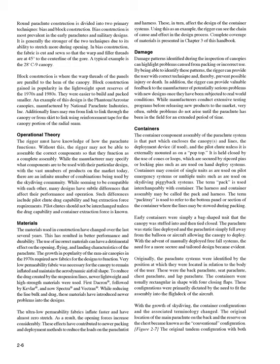Damage. Damage patterns identified during the inspection of canopies can highlight problems caused from packing or incorrect use. By being able to identify these patterns, the rigger can provide the user with correct technique and thereby prevent possible injury or death. In addition, the rigger can provide valuable feedback to the manufacturer of potentially serious problems with new designs once they have been subjected to real-world conditions. While manufacturers conduct extensive testing programs before releasing new products to the market, very often subtle problems do not arise until the parachute has been in the field for an extended period of time.